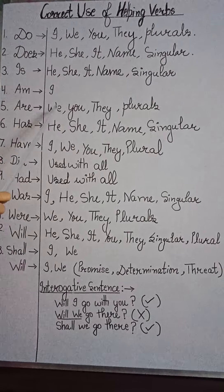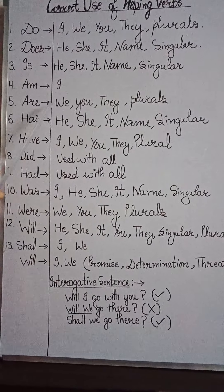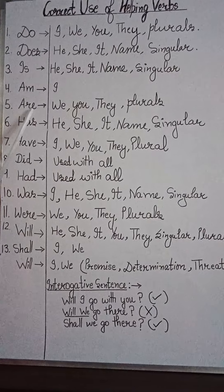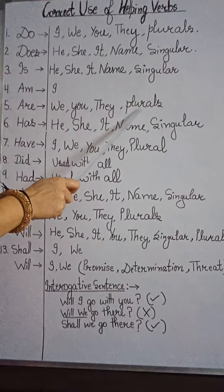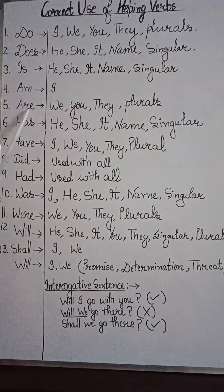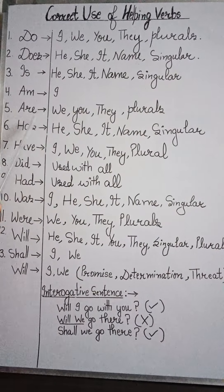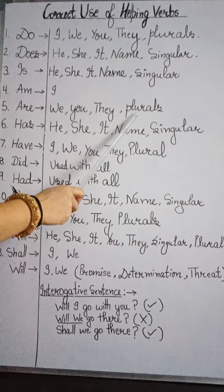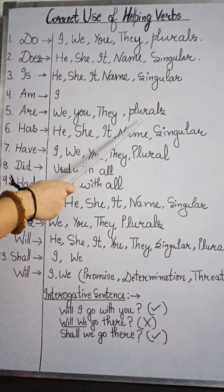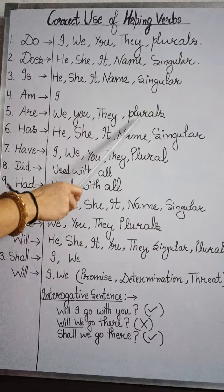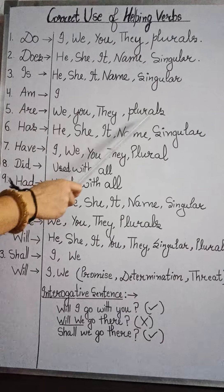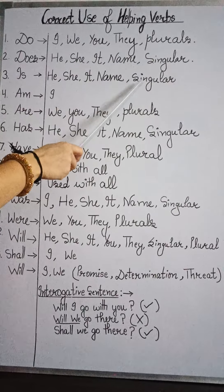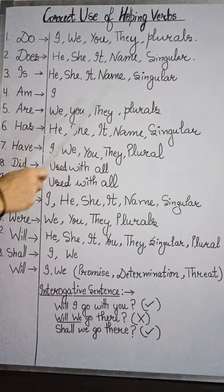'Are' जो है वो we, you, they और plurals के साथ use होता है। 'You' चाहे singular के लिए use हो रहा हो या plural के लिए — दोनों ही cases में 'are' ही लगेगा। 'They' के साथ भी 'are' लगेगा, और बहुवचन किसी भी हो उसके साथ 'are' ही लगेगा। जैसे कि 'we are going to the market,' 'they are coming to our house,' 'birds are flying in the sky।' हम यह नहीं कह सकते 'birds is flying in the sky' — वो wrong होगा। अगर एक वचन हो जैसे 'bird' तो 'bird is flying in the sky' सही है।